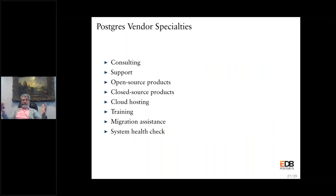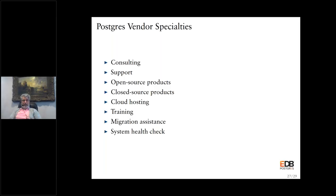What is your vendor typically going to do? There's going to be support and consulting. Do they have open source and closed source products you can use? Do they do cloud hosting, training, migration help, system health checks? These are the types of things you need to look for in a vendor. You now have a choice — it's up to you to choose the vendor that will make you the most efficient and save you the most money. A lot of times the answer isn't to do it yourself; it's to get a vendor with good alignment with your needs and cost structure.